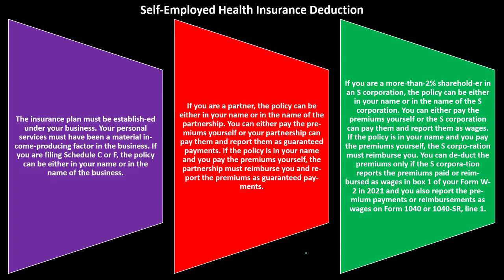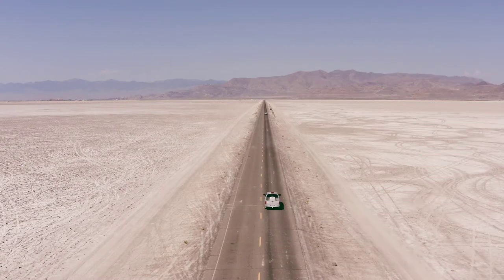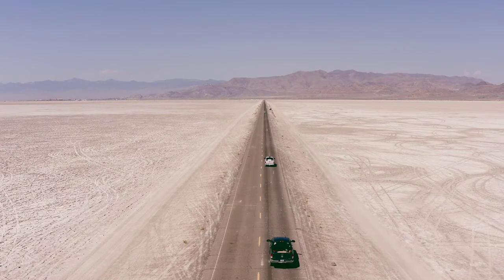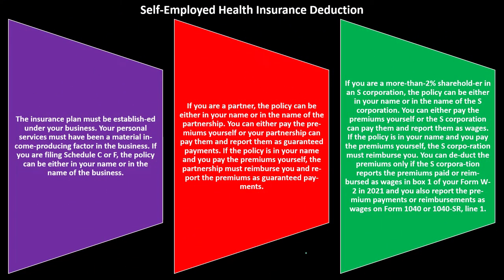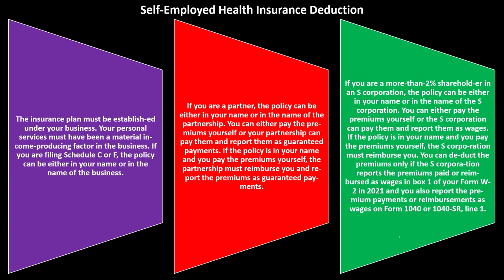It's a little more straightforward with a Schedule C business or a partnership where you're still paying self-employment tax after it flows through to Form 1040. For the S corporation, when you're setting things up you probably want to dive in further and get a better understanding of exactly how things are working with the insurance situation.